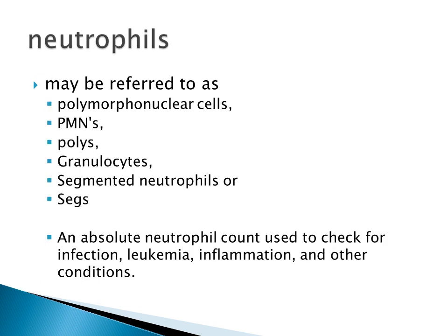Neutrophils can also be referred to as polymorphonuclear cells (PMNs), polys, granulocytes, segmented neutrophils, or SEGs. Note that these names can be found in different lab reports, as different machines give different names.